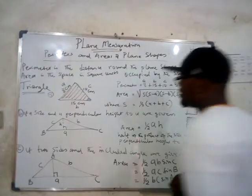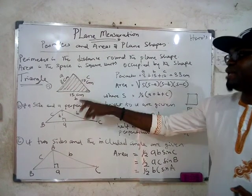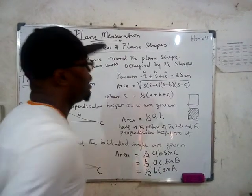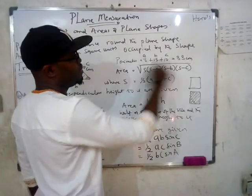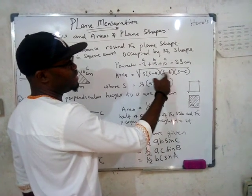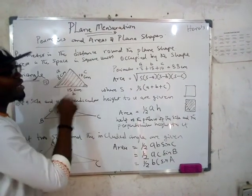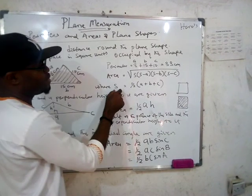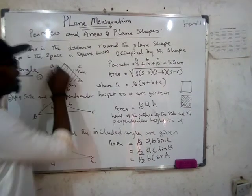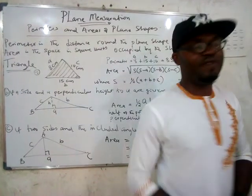So how do we calculate it? If we are given all three sides — a, b, and c — you use what we call Heron's formula. It states that area is simply the square root of s(s minus a)(s minus b)(s minus c), where a, b, c are the sides. And s can be gotten by taking half of the summation of the sides. That is the formula you use when all three sides are given.